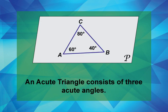An acute triangle consists of three acute angles. This is an example of an acute triangle. See how all the angles are less than 90 degrees?